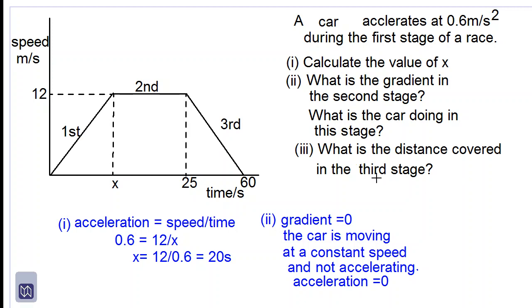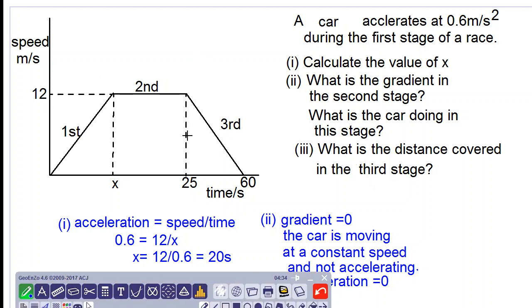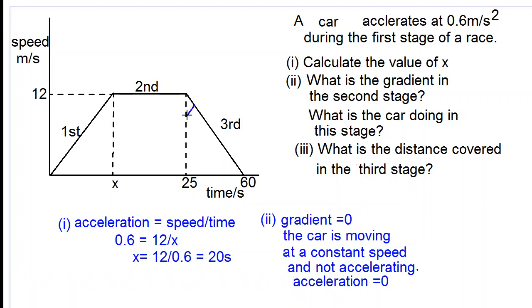What is the distance covered in the third stage? The distance in a speed-time graph is equal to the area under the graph. In the third stage, which occurs between 25 and 60 seconds, we must find the area of the shaded region.